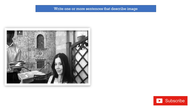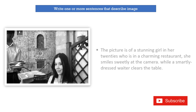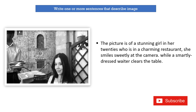This is a new picture in front of you — tell me what you can write about it. You have to write one or more sentences within 60 seconds. For example: 'This is a stunning girl who wore a cute smile on her face with black, shiny, long hair. She wore a necklace and there is a waiter in front of her who appears to be cleaning the table.'